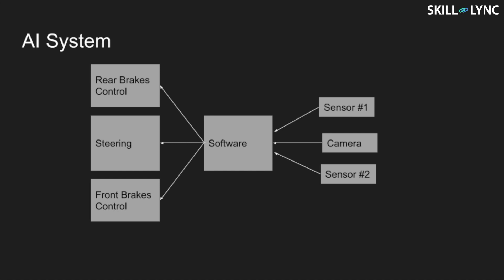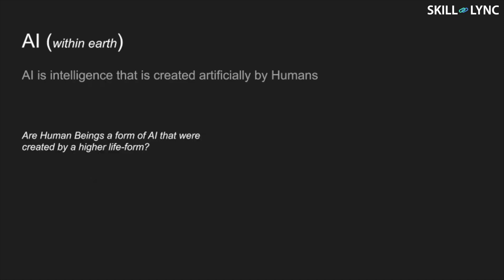On this slide, we have a simple block diagram that represents how a self-driving car is controlled. In conclusion, artificial intelligence is intelligence that has been created artificially by humans. One could even say that human beings are a form of artificial intelligence that were created by a superior form of living being.